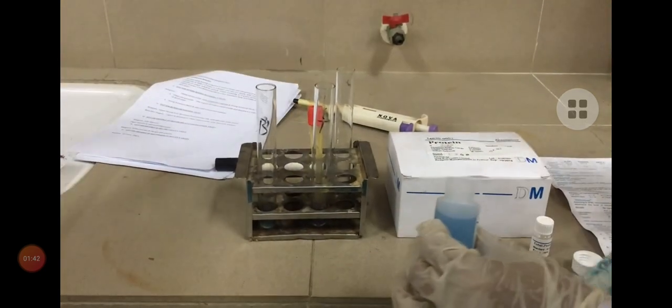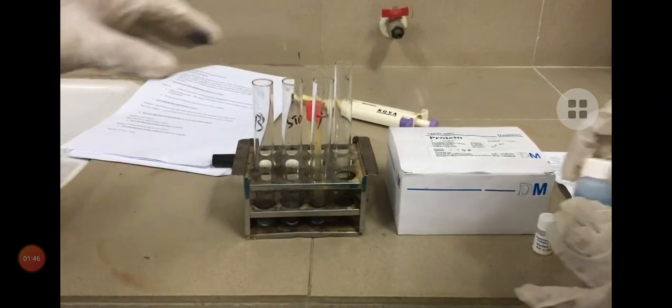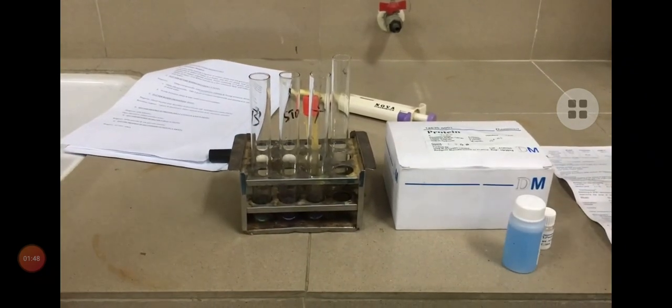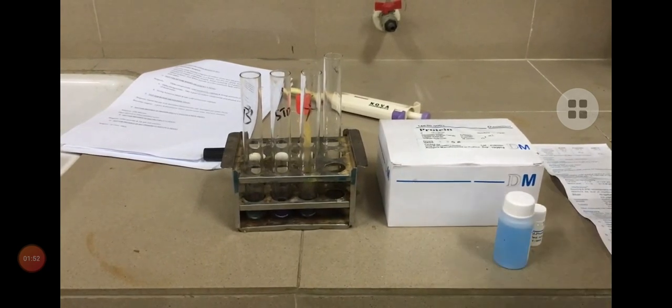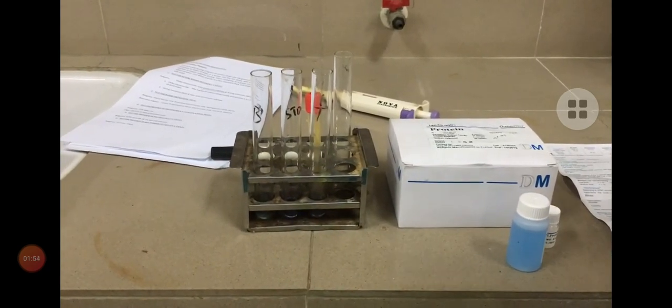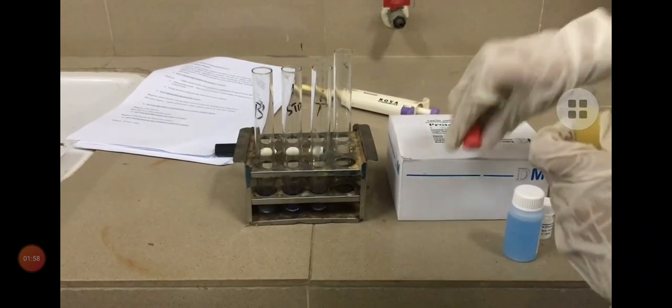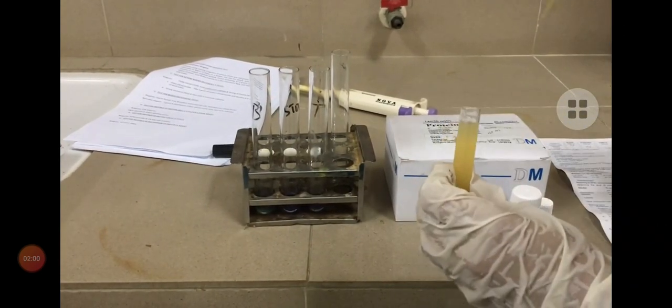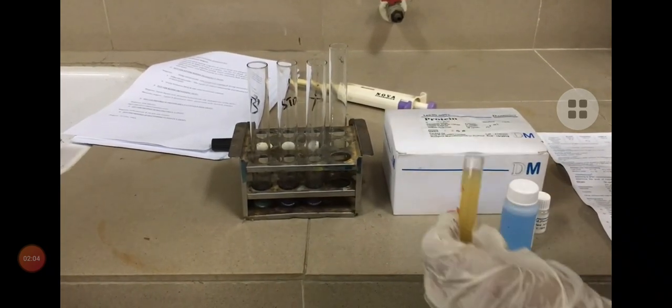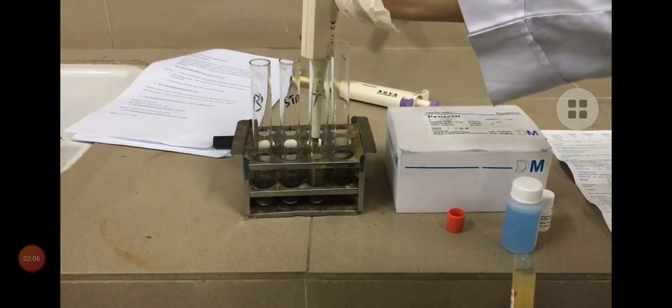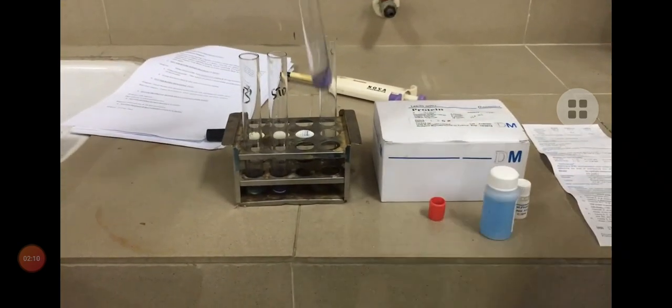Adding reagent: 3000 microliters of this reagent in all the test tubes. Three test tubes: blank, standard, and test. We have added 3000 microliters of this reagent which is shown in the blue bottle. Now we are adding the standard solution in the test tube. We have added 30 microliters of the sample in the test tube.